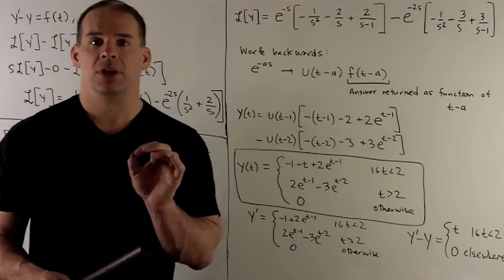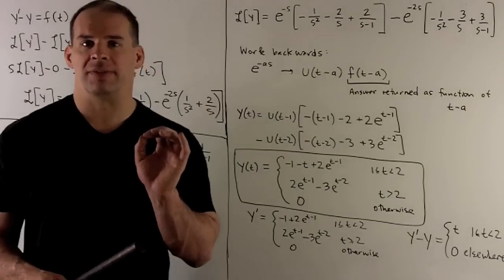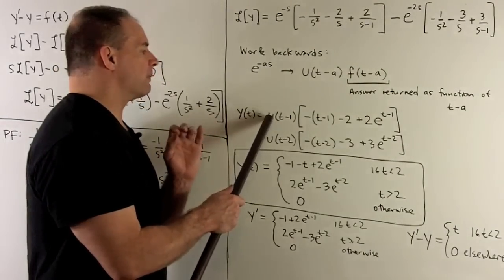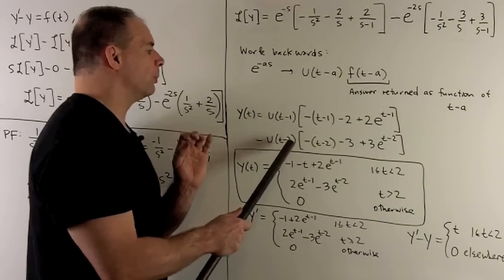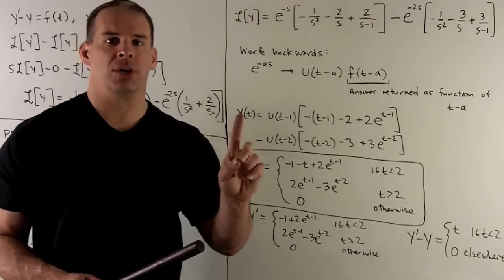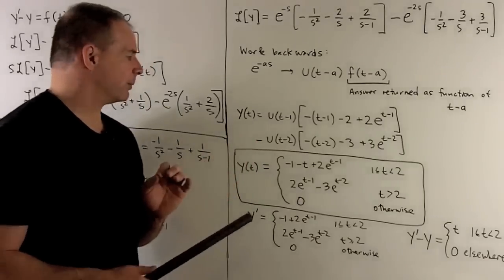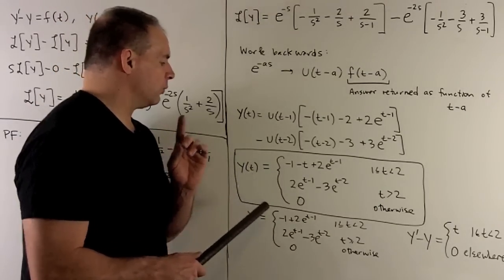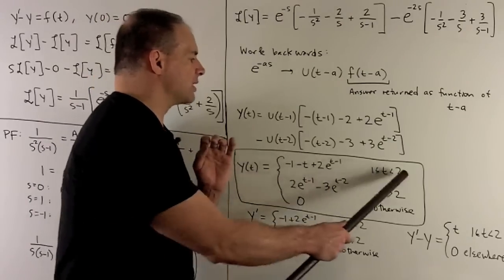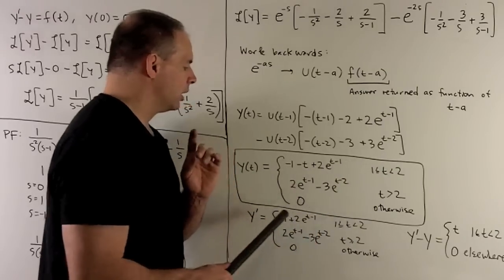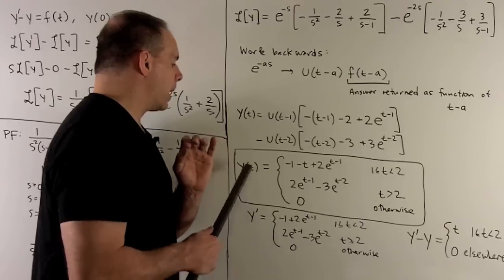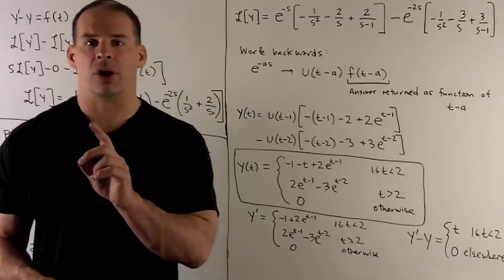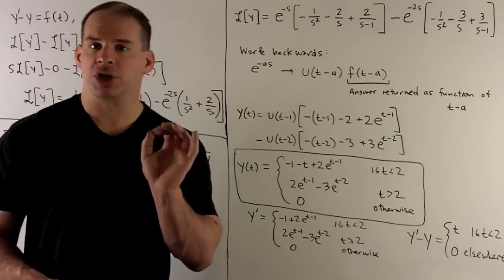We should verify the answer by putting it through the initial value problem. First, y of zero equals zero: since the unit step functions shifted by one and two are both zero at t equal to zero, y of zero is indeed zero. Then we take y prime minus y — differentiating each piece of the piecewise function — and what remains is t on the interval from one to two, including one. Our work checks out.